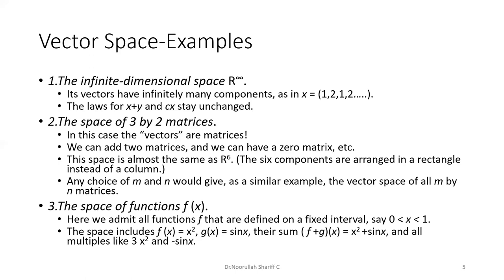The six components of a 3-by-2 matrix are arranged in rectangular form rather than as a column. More generally, you can choose different values of m and n to form an m-by-n matrix vector space. The third example is the space of functions f(x) defined on a fixed interval, for example 0 < x < 1. This space includes f(x) equals x-squared, g(x) equals sin(x); their sum f plus g of x equals x-squared plus sin(x), and all scalar multiples such as 3x-squared and minus sin(x).